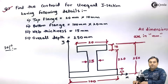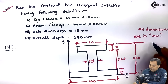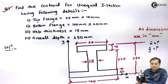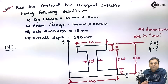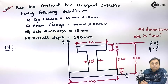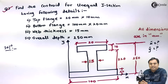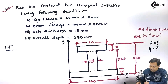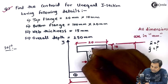We need to find the centroid, which means calculating x-bar and y-bar. Since there is no direct formula for the centroid of an I-section, I will divide this I-section into three simple rectangles: rectangle one, rectangle two, and rectangle three.